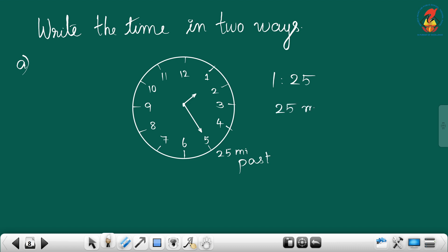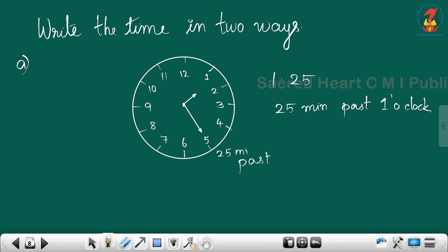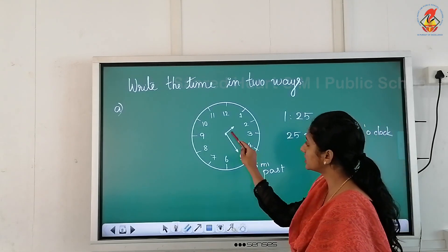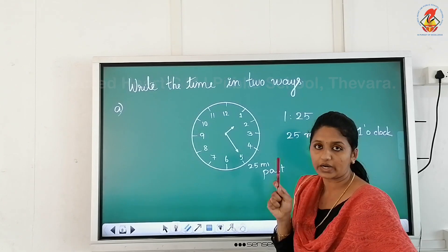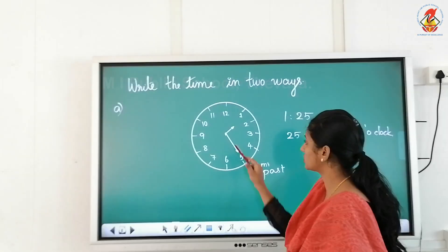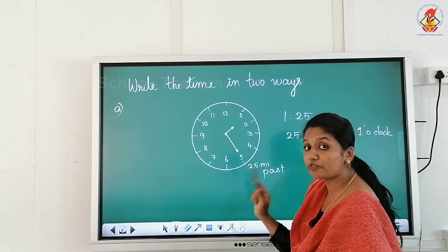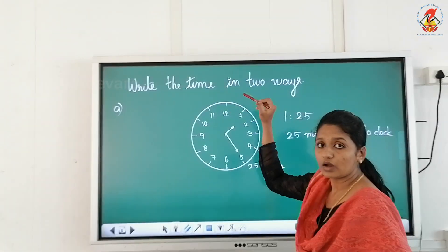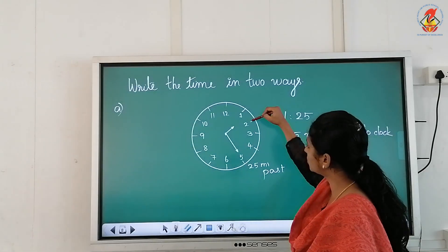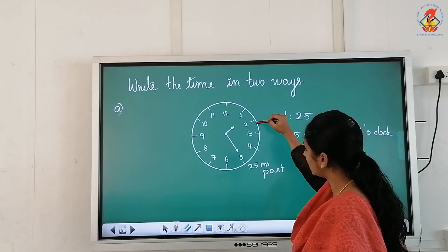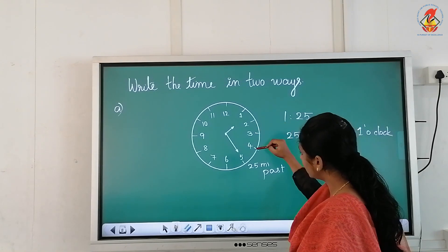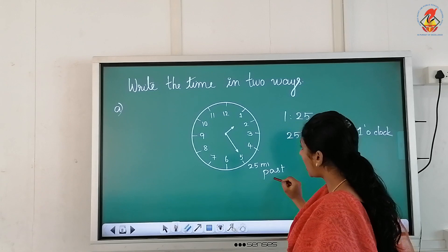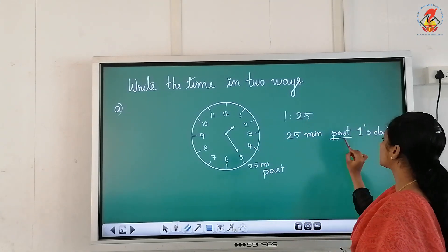Another way we can say: twenty-five minutes past one o'clock. The hour hand is between one and two — just past one, not yet reached two. The longer hand is on five, so: twelve to one is five minutes, one to two is ten minutes, fifteen, twenty, twenty-five minutes past one o'clock.